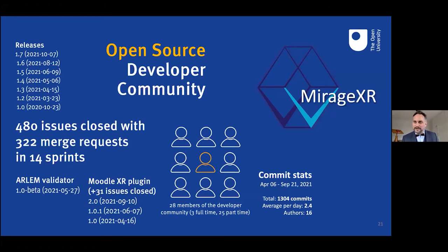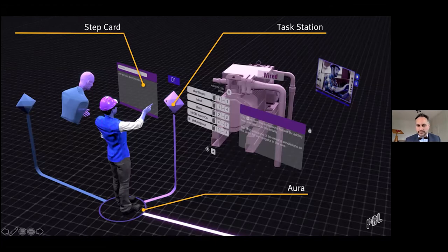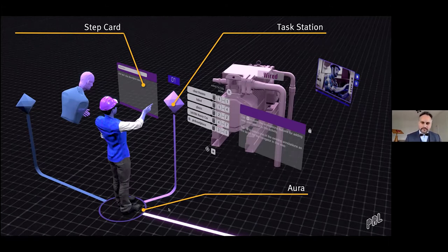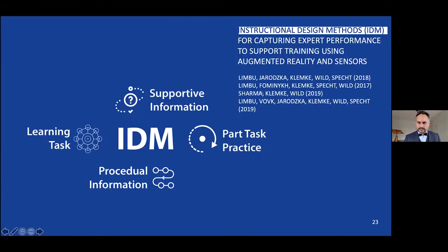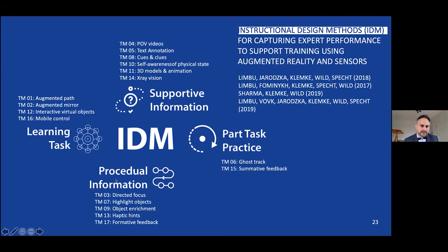We believe in it and think we're on the right track, moving things forward towards reality as a platform for learning and teaching. The way it is conceptualized in our system is like this: we consider learning to take place in activities. Each activity consists of steps, and steps always have a task station — a location of interest — and a description of the step. So that you don't get lost, there's always an aura surrounding you: if you look down you will always find a floor line which takes you to where the action happens. In that space, we have different types of augmentations attached, coming from an instructional design model — specifically a modified 4C/ID model — consisting of four areas: supportive information, part-task practice, procedural information, and learning tasks.